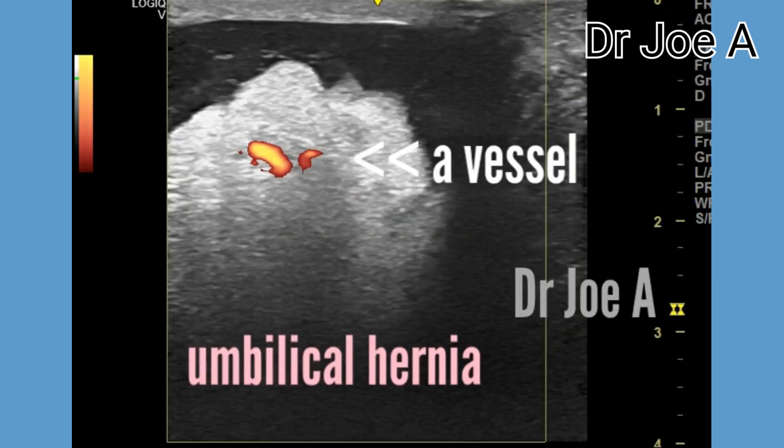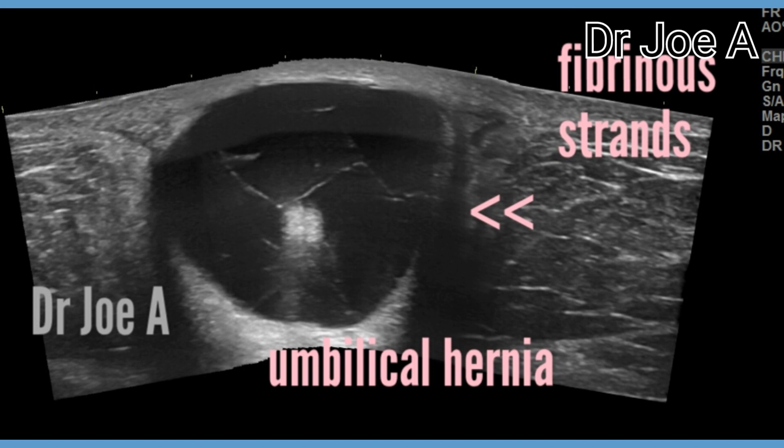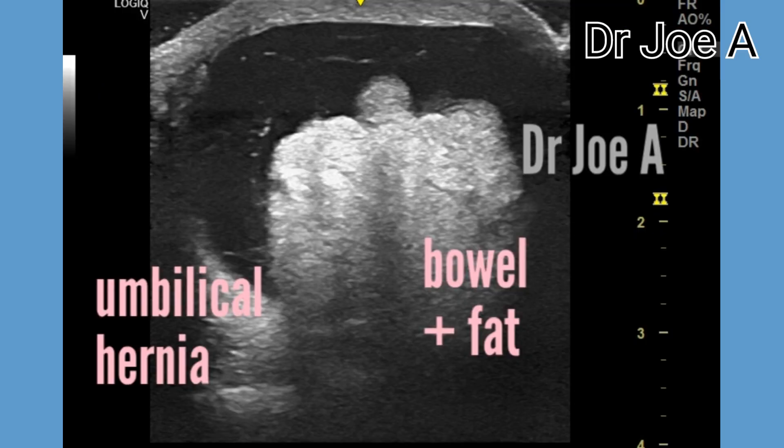In this patient surgery is considered, and the radiologist can provide valuable information about the size and location of the hernia, the extent of the hernial sac and contents, and the thickness of the abdominal wall at the hernial site. This information can help the surgeon plan the appropriate surgical approach for treatment.